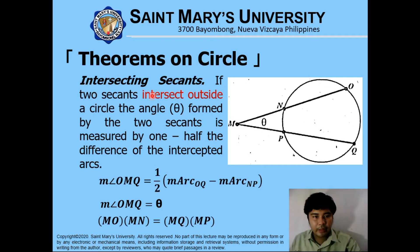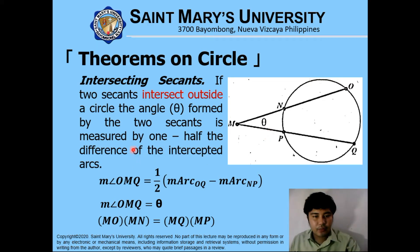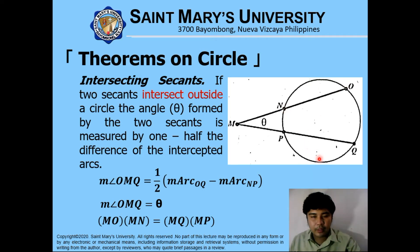For theorems on circles under intersecting secants — if two secants intersect outside the circle, the angle theta formed by the two secants is measured by one half the difference of the intercepted arcs. In symbols: theta is equivalent to one half the measurement of the larger arc length less the measurement of the smaller arc length. To find the length of one of the line segments, MN or NQ, you apply the relationship: MO multiplied by MN is equivalent to MQ multiplied by MP.